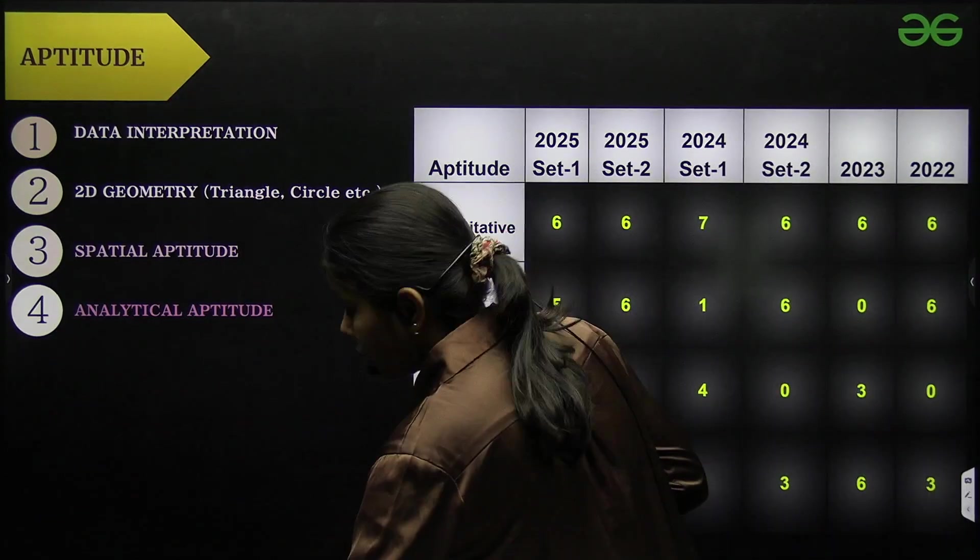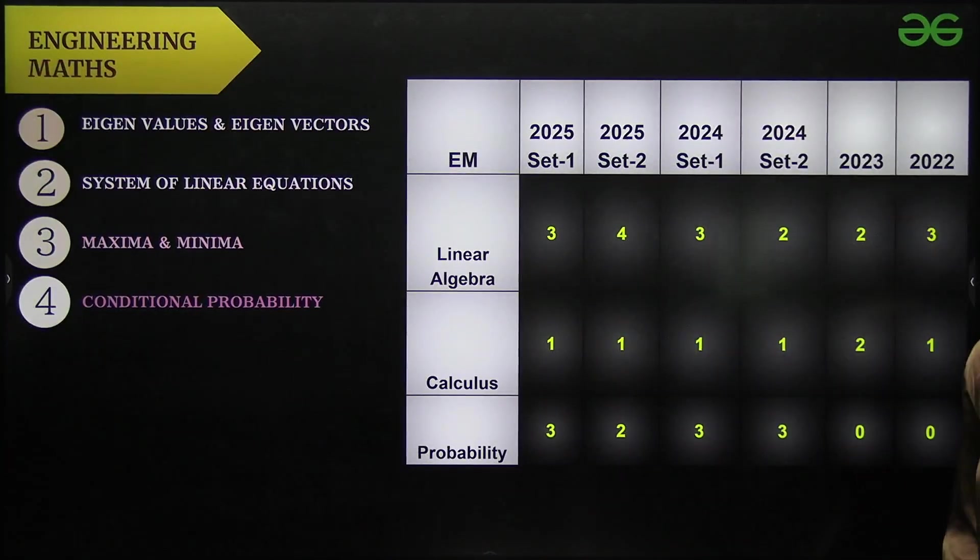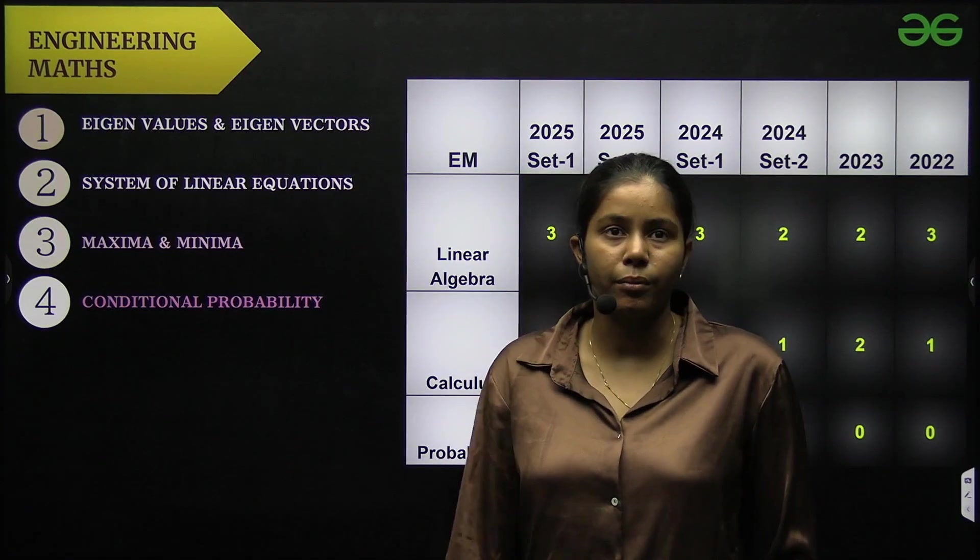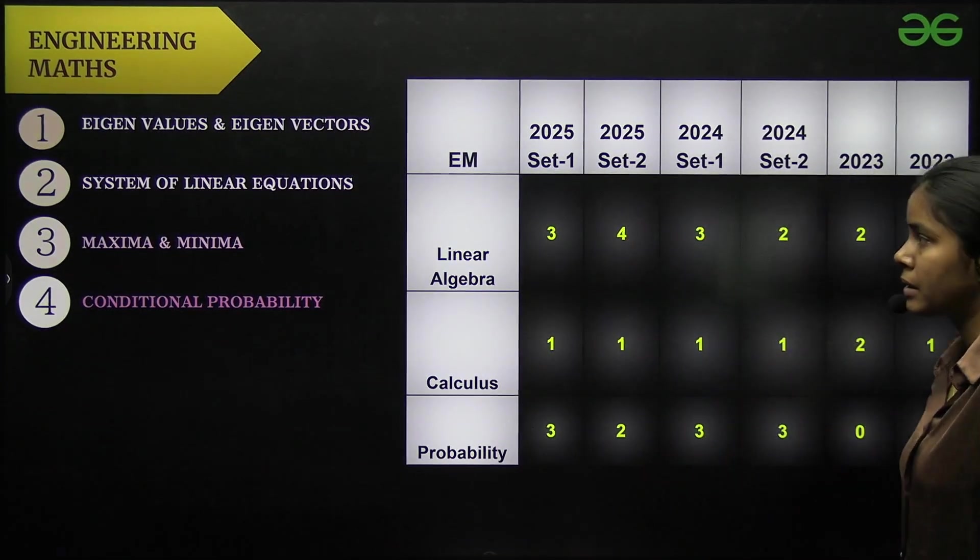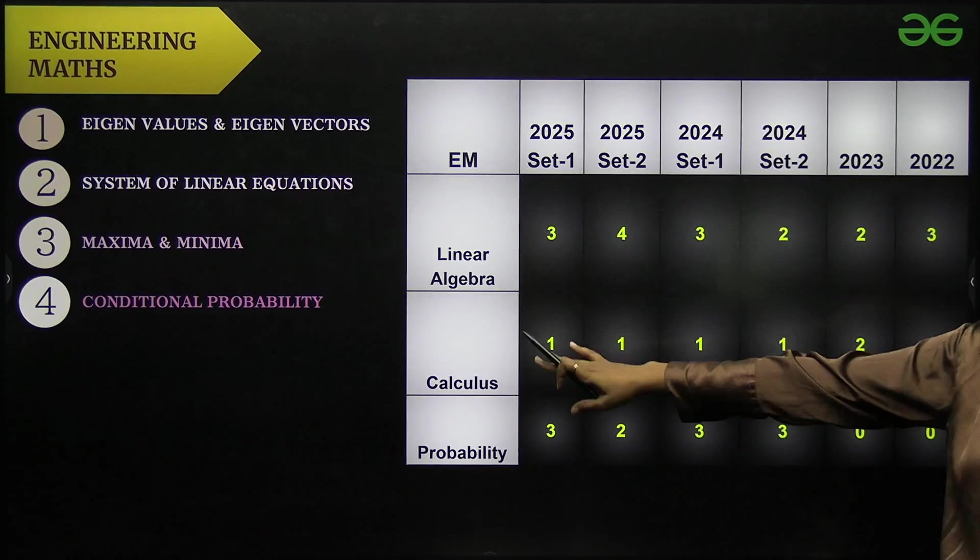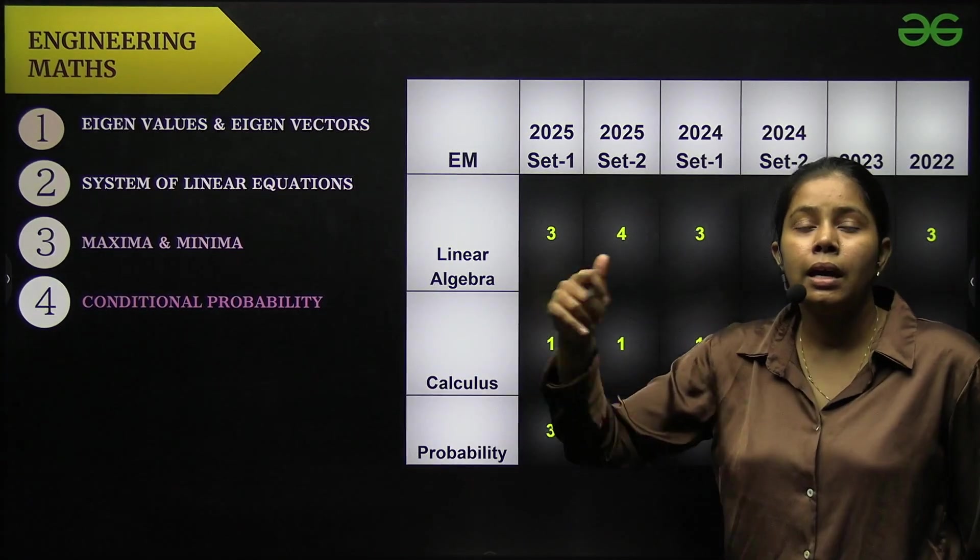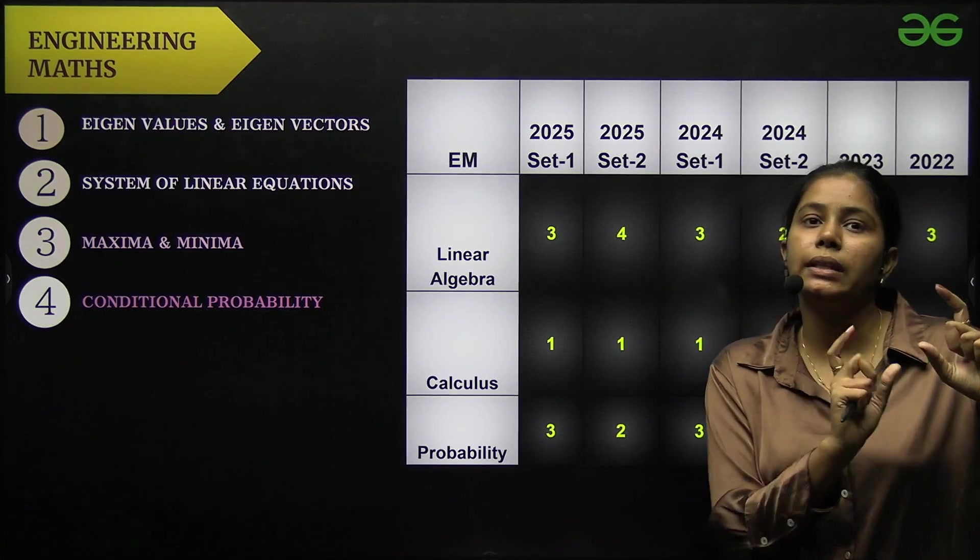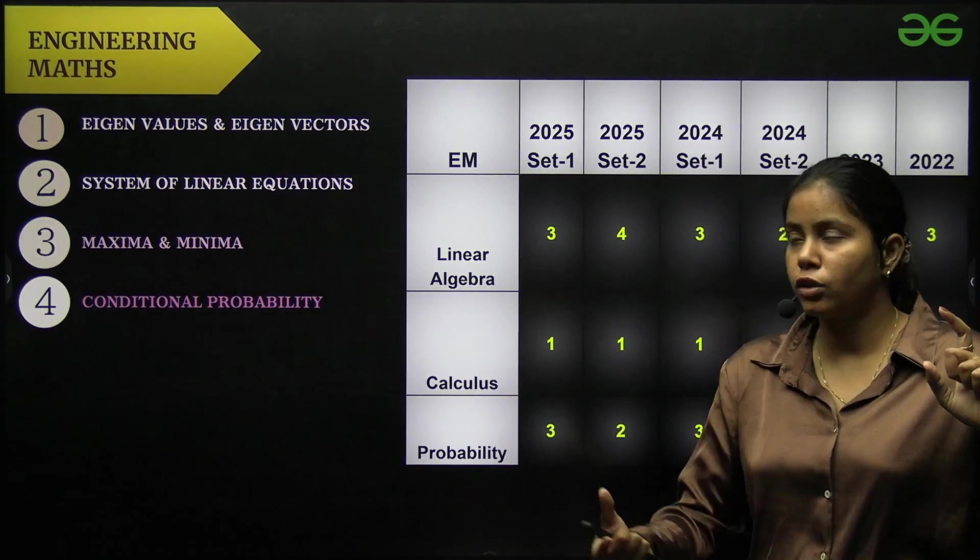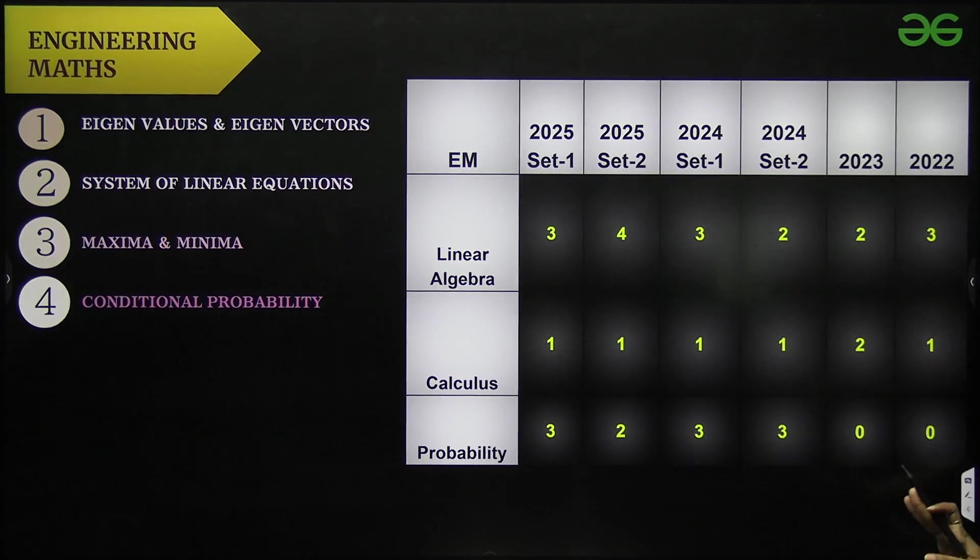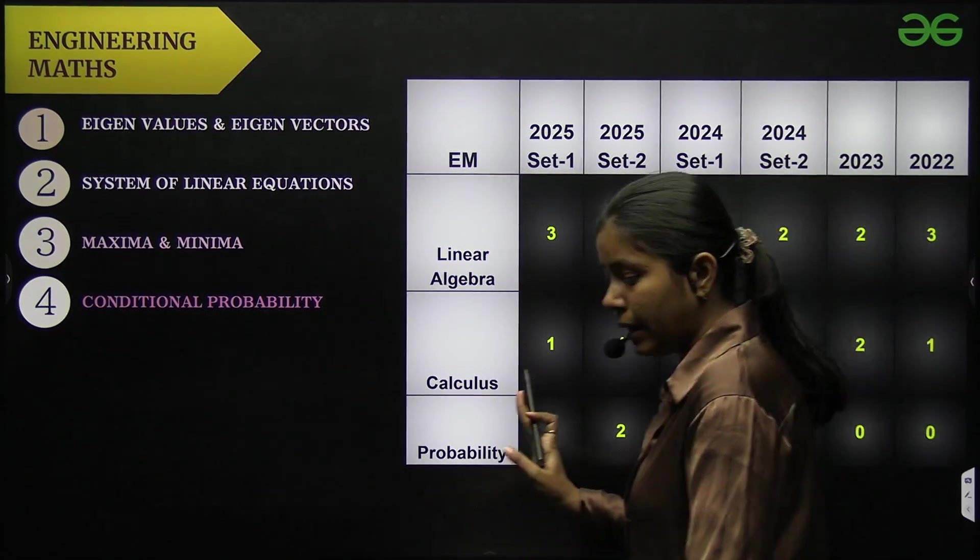Engineering mathematics, so we have seen that in past years they are asking questions, 7 or 9 marks from engineering mathematics. Important topics are: eigenvalue eigenvector, system of linear equations, maxima minima, and conditional probability. Not only conditional probability, there are subtopics like Bayes theorem and law of total probability. Generally they ask questions from that. So these are the weightages from past years.